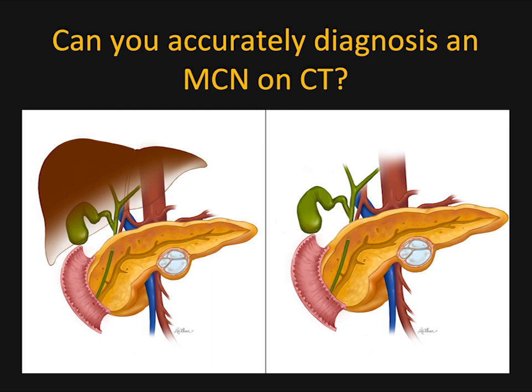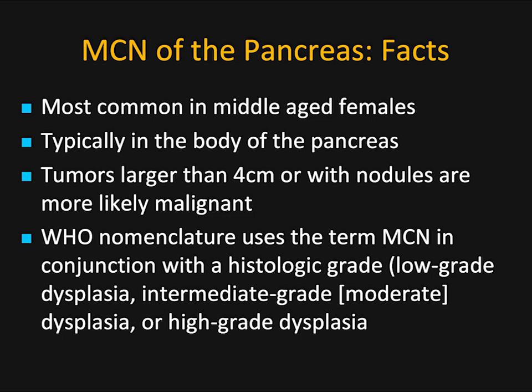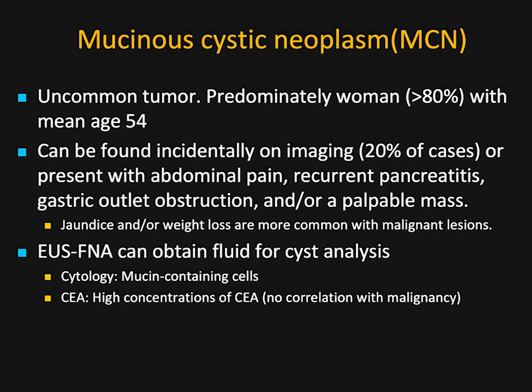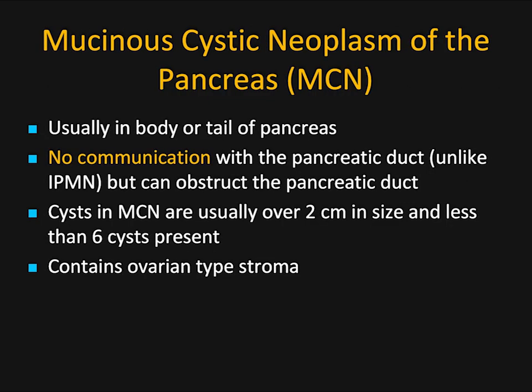So I've shown you a lot of different cases. Can you accurately diagnose MCN on CT? The things that help you: middle-aged female, typically body or body-tail junction of the pancreas, often larger than 4 cm but can be smaller. When they have thick septations or nodules — especially nodules — they're more likely malignant. Although we'd love to give the histologic grade — low-grade, intermediate, or high-grade — we typically can't do that unless there's lots of nodularity and enhancement, in which case we can call it high-grade. But we're not always going to be right. Again, the age, location, 20% are incidental, but the majority are going to be symptomatic. EUS can be valuable.